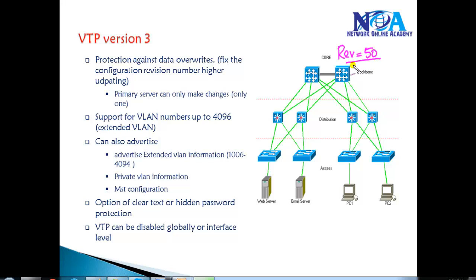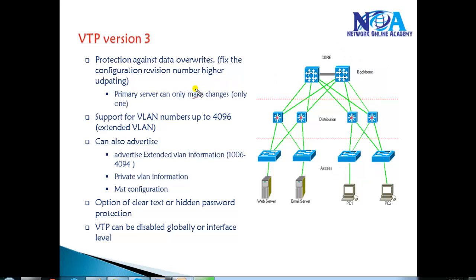For example, if your network has a revision number of 50 and a switch that was used for testing in a storeroom is added back, and that switch has a higher revision number, all switches will update their VLAN database with whatever VLAN information that switch carries. In previous versions, the switch with the highest revision number is considered to have the most updated information. In VTP version 3, this behavior is changed by defining specific roles for switches.